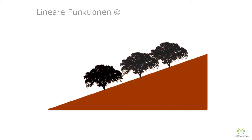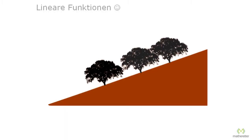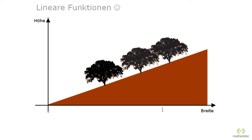Here you see a mountain in front of you in cross section. Let's label this mountain with a width at the bottom and a height to the side. That means we could measure the height from the side and measure the width from the bottom of the mountain.